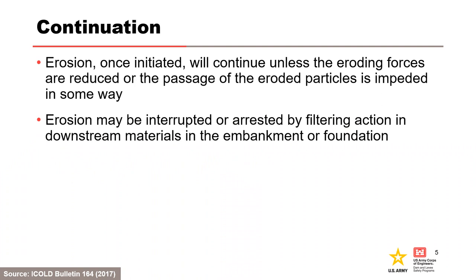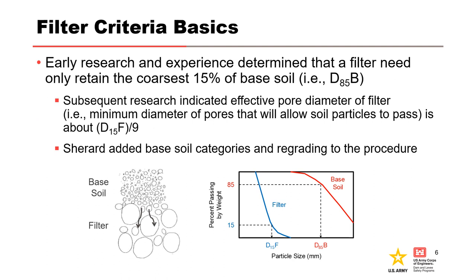Continuation is the second phase of internal erosion. Once erosion is initiated, it will continue unless the eroding forces are reduced or the passage of the eroded particles is impeded in some way. Erosion may be interrupted or arrested by filtering action in downstream materials in the embankment or foundation. Dam engineers have known since the 1950s and 1960s that the most efficient way of stopping the erosion process is to zone the dam and to provide filters.